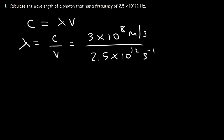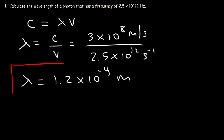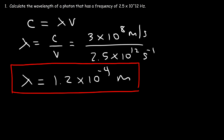So basically we just need to divide these two numbers, and you should get 1.2 times 10 to the negative 4 meters. That's all you need to do in order to get the answer.